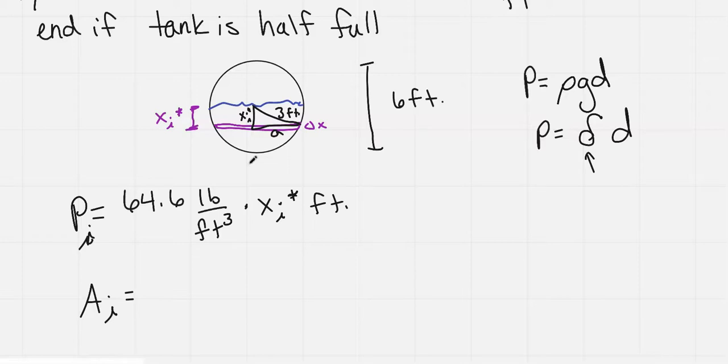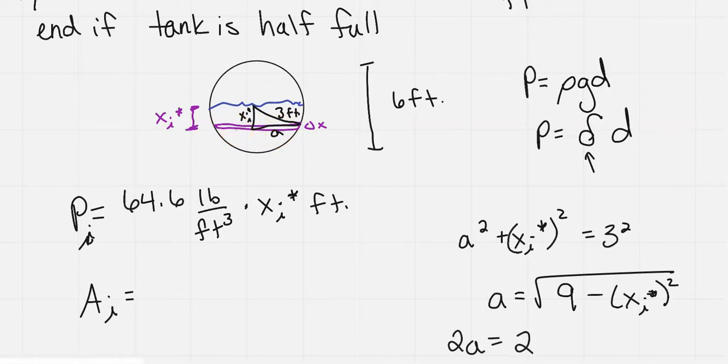So I'm going to use Pythagorean's theorem and I get a squared plus x sub i star squared is equal to 3 squared. So just doing some computations, moving some stuff around, taking the square root, I get a equals the square root of 9 minus x sub i star squared. But I need 2a because I have half of this width and I need the second half, which would be 2a. And that would be 2 times the square root of 9 minus x sub i star squared.